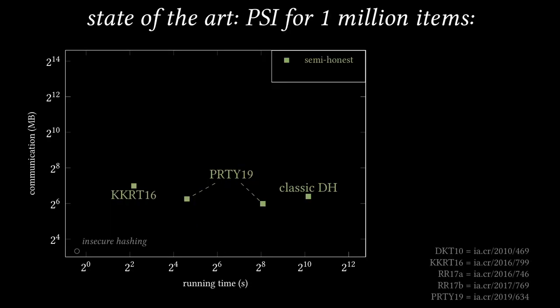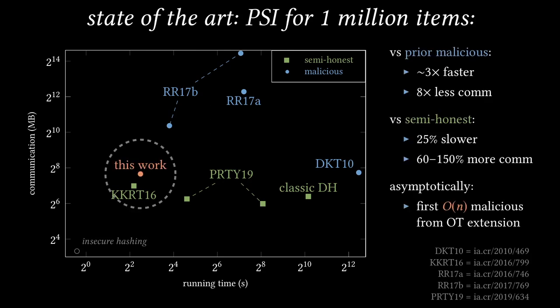To understand the context of our new results, I'll show you the state-of-the-art in PSI. Here's a graph showing running time and communication cost of different two-party protocols executed on sets of size 1 million. Faster protocols are to the left, and protocols with less communication are towards the bottom. Note that both axes are in log scale. First the semi-honest protocols. The fastest one is due to Kolesnikov, Kumarasan, Rozilek, and True. It requires about 4 seconds for the intersection of sets of size 1 million. The fastest malicious PSI protocol is due to Rindl and Rozilek, and it requires about 14 seconds. Note the sizeable performance gap between the fastest semi-honest and fastest malicious protocol. Our new protocol almost closes this gap. It achieves malicious security but is only 25% slower than the fastest semi-honest protocol. Asymptotically, it is the first linear-time PSI protocol with malicious security based on OT extension.